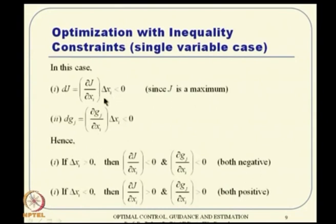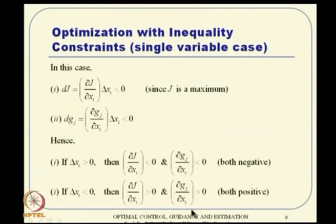If δxᵢ is positive, then both ∂J/∂xᵢ and ∂gⱼ/∂xᵢ must be negative. If δxᵢ is negative, both must be positive. The key conclusion is that both must take the same sign, regardless of whether δxᵢ is positive or negative. That is the conclusion for a maximization problem. For a minimization problem, the sign alters — the inferences would require opposite signs for the two partial derivatives.